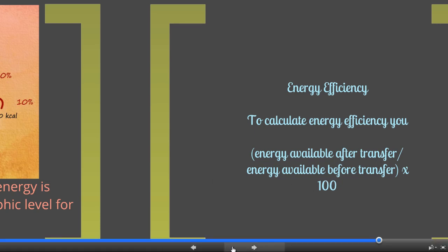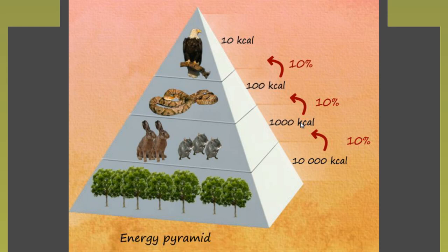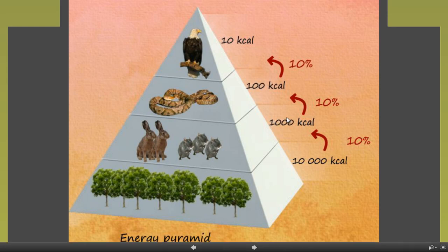Looking at these values, if we go from the producers to the primary consumers, you take the energy after the transfer — which is 1000 in this case — and divide by 10,000, then multiply by 100, which gives our 10 percent. In an exam question they might give you values that vary somewhat, but it is always the same: you take the second number divided by the first and then multiply by 100 to get the percentage transfer.